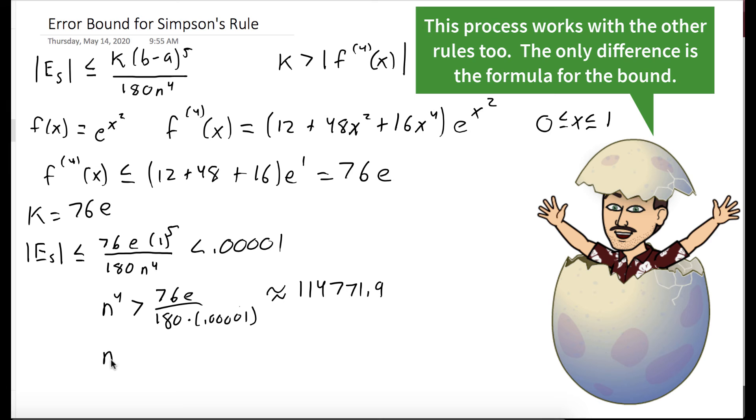Taking the fourth root of both sides of this inequality, we'll see that n has to be greater than 76e over 180 times 0.00001 raised to the 1 fourth, which with the help of the calculator is approximately 18.4. So we'll round up and we say that we need to have at least 19 regions for our error to be as small as we'd like.